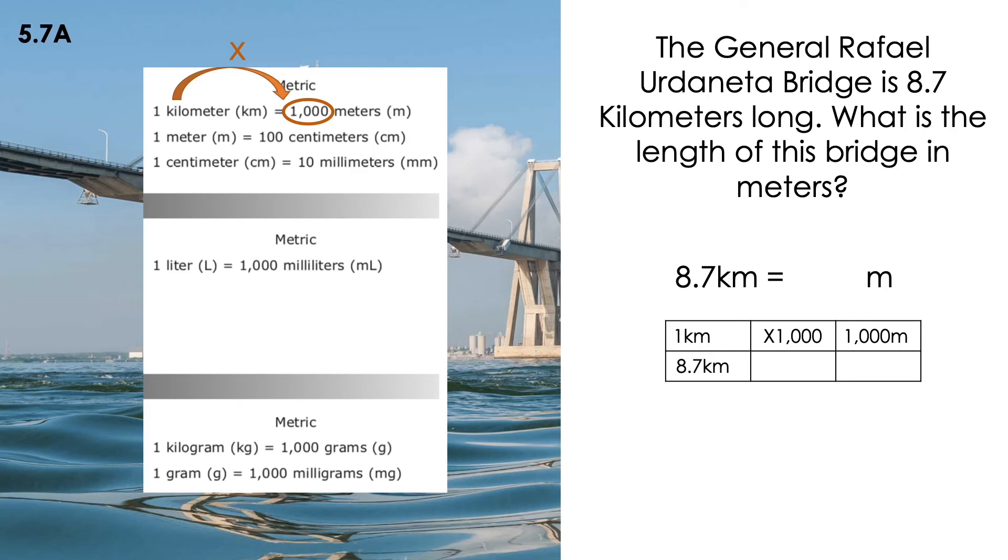So 8.7 kilometers, I have a decimal. What am I going to do? I'm going to move my decimal three spaces because I am multiplying by 1000. That means my answer will be 8700 meters.